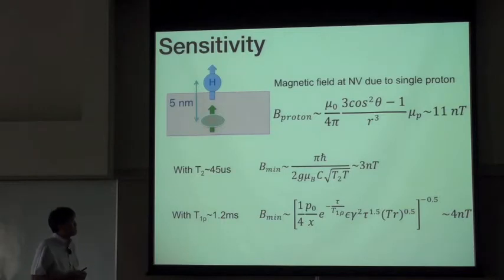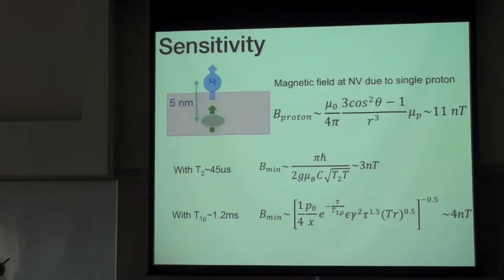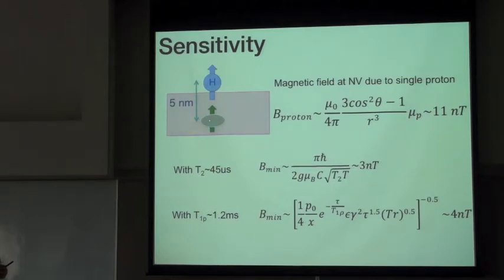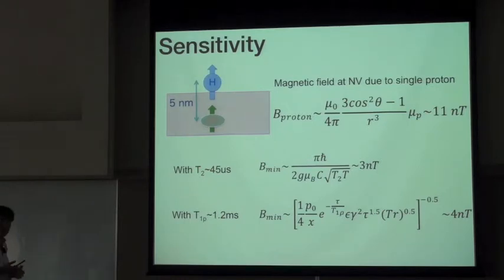This is the estimation of how small a magnetic field we can detect using such an NV center placed in the 5-nanometer thin film. With a distance of 5 nanometers from the surface, hydrogen placed on such a film should impose a magnetic field of about 11 nanotesla at the position of the NV center. Our goal is to detect 11 nanotesla from such a proton on the surface. With T2 of 45 microseconds, we should be able to detect magnetic fields as small as 3 nanotesla, so we should be able to detect such 11 nanotesla from a hydrogen on the surface.